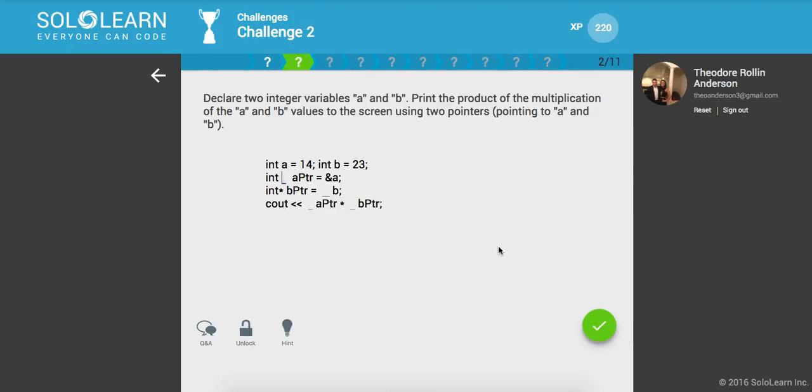So declare two integer variables A and B for the product of the multiplication of A and B values to the screen using two pointers pointing to A and B. So here we'll have integer point A is equal to this address, and then we'll have integer point B is equal to this address. Now let's go ahead and print out, what do we want to print out? I guess these two addresses, unless I did it wrong. All right, I guess I did.